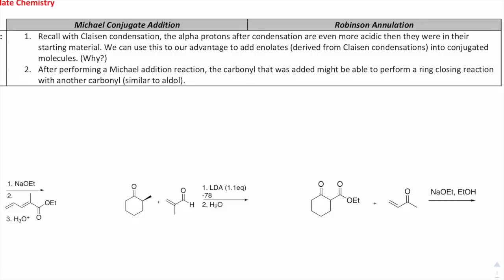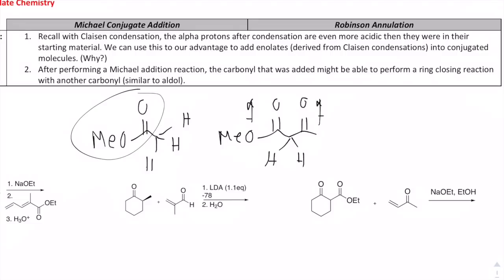Recall with Claisen condensation, the alpha protons after condensation are even more acidic than they were in their starting material. We can take advantage to add enolates derived from Claisen condensations into conjugated molecules. So the question is why? Let me give you that rationale for why we can do these reactions.